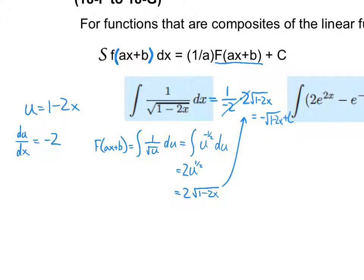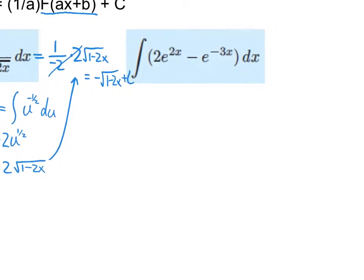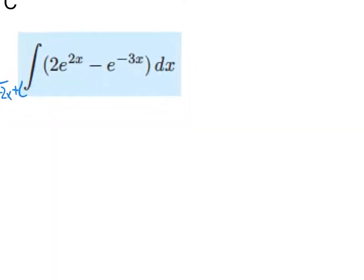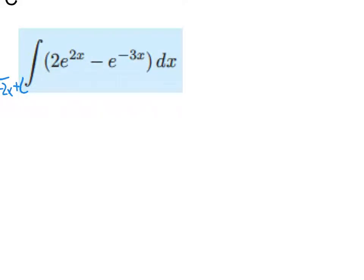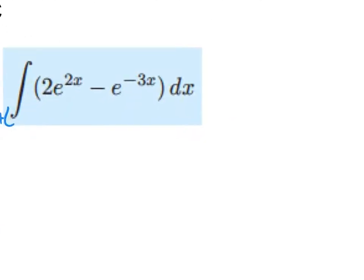Once you get the hang of this, you won't write out all of this work. The only reason we found the derivative of u is because the formula says to do 1 over a times that antiderivative. We do have to find the derivative of something, because that's what a is. That a is the slope of the line, or the derivative of that linear function — it's the 1 over a in our formula.